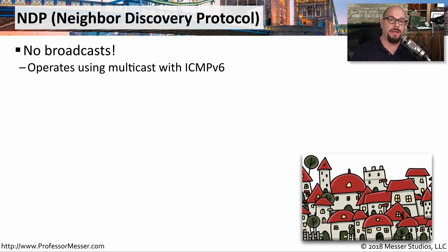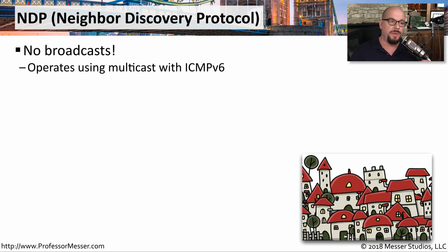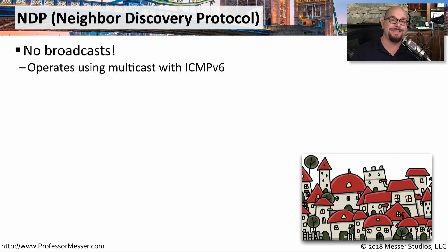One of the big advantages to IPv6 is we didn't have to worry about broadcasts anymore, but we still have the requirement of having devices find other devices on the network. To be able to do that, we use NDP, or the Neighbor Discovery Protocol with IPv6, and it uses multicasts instead of broadcasts.